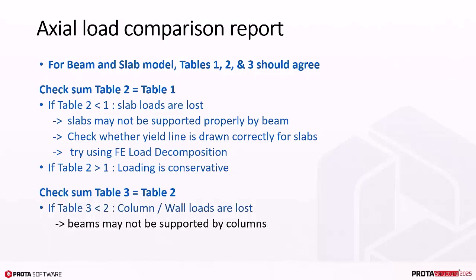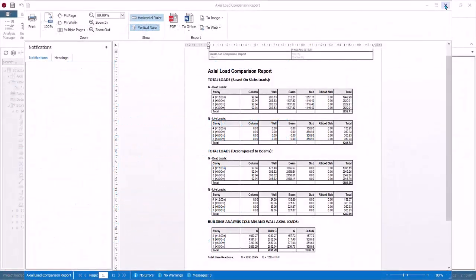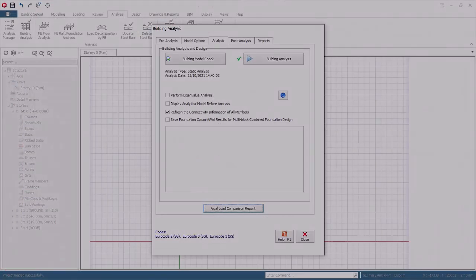For example, beams may not be supported by columns properly, or the other way around — the columns are hanging in the air. Similarly, check values of each story to identify the culprit story. If Table 3 is more than Table 2, the axial loads are more than expected, and hence conservative. However, if the difference is significant, then you should also go back to your model to investigate. Close the axial load comparison report window to proceed.